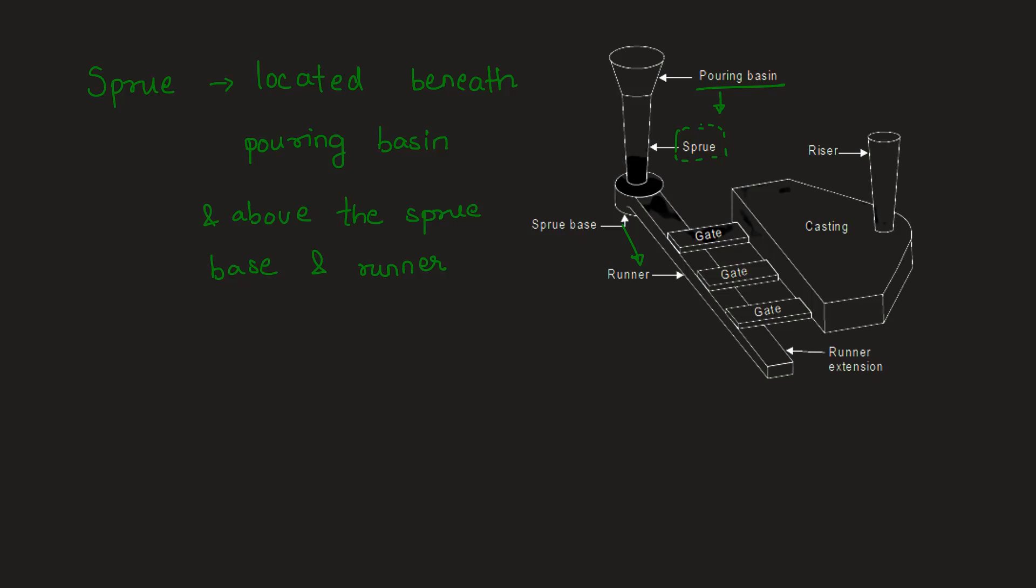As the molten metal enters the pouring basin, it flows downwards due to gravity. This well-like structure called the sprue directs it towards the runner. So, the sprue is nothing but a vertical channel that takes the molten metal to the runner.